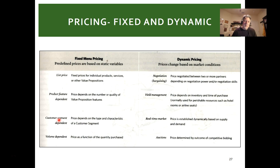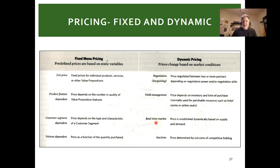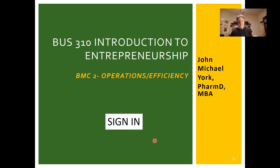In healthcare, a hospital versus a patient may have different pricing based on volume. Larger volumes tend to get better pricing. Loyalty also gets discounts. Negotiation — like bargaining in bazaars or real estate — determines the final price. Yield management depends on time of year, time of purchase, and available inventory — tight inventory or peak season like Christmas allows higher prices. Real-time market pricing, like housing markets or eBay auctions, is based on supply and demand.